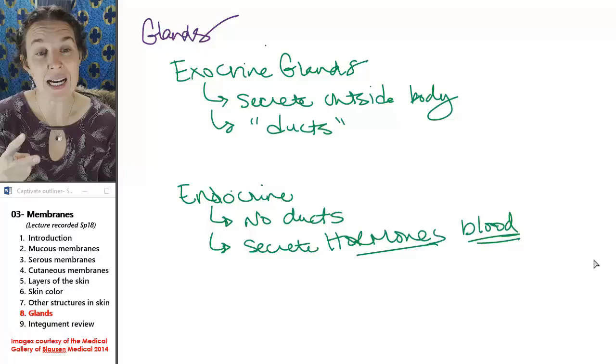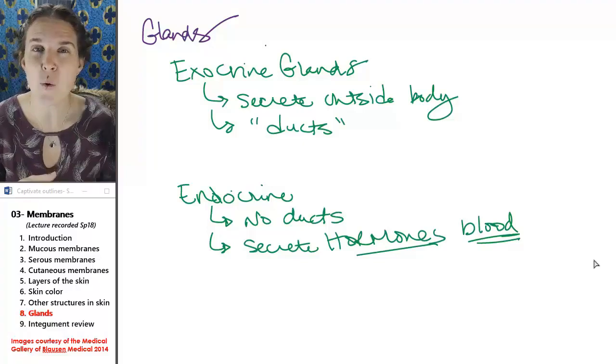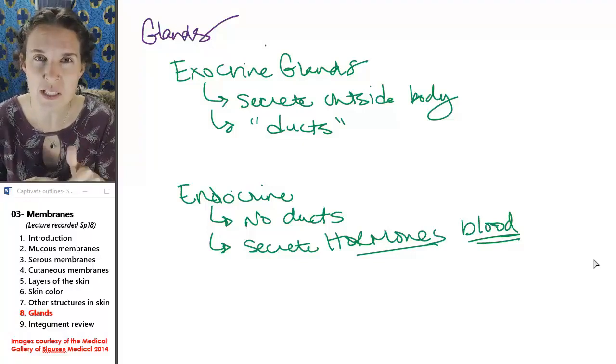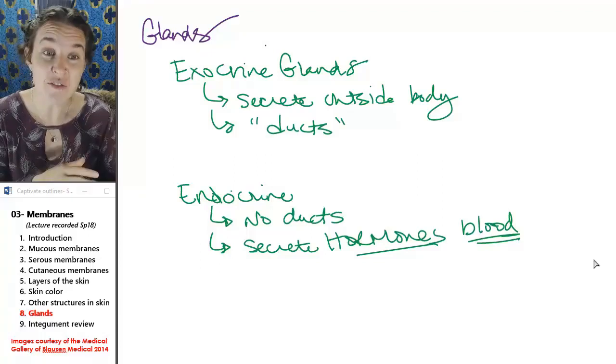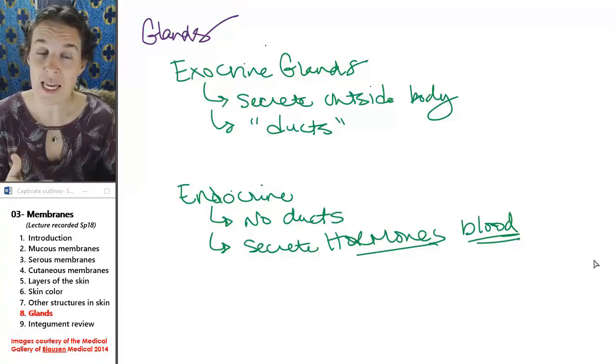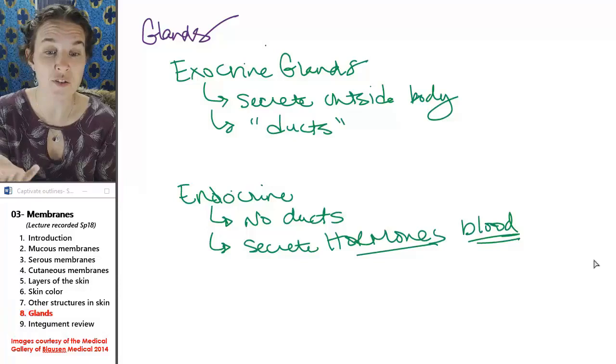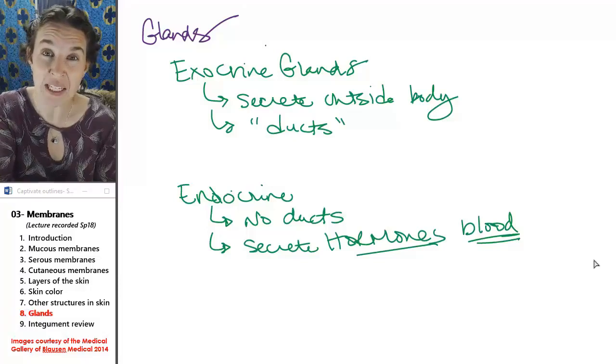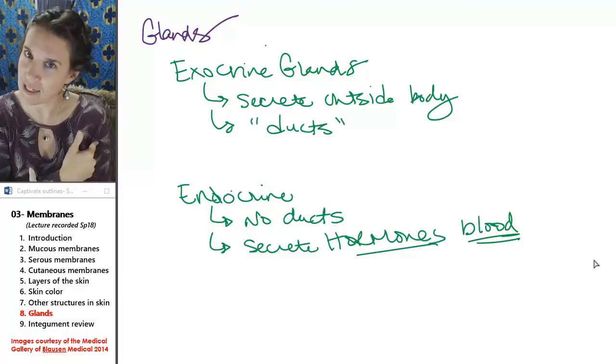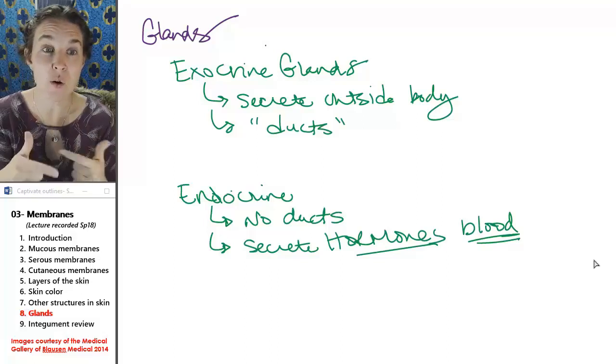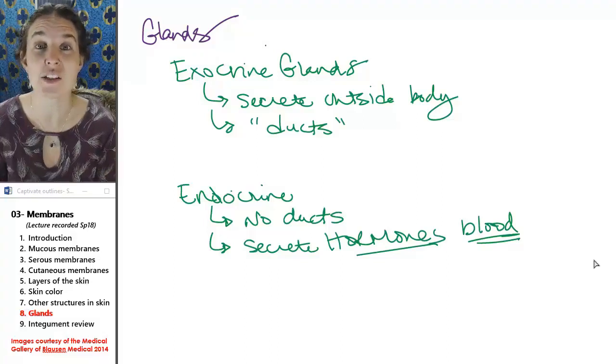The two main kinds of glands depend on where the substance is being secreted. So if the secretion is being produced and secreted outside of the body like sweat glands, then those glands are exocrine glands.